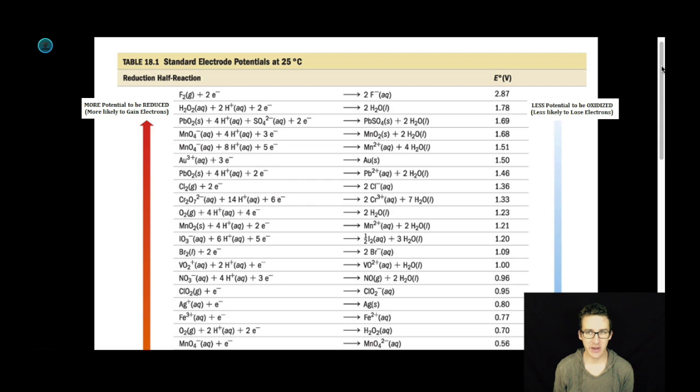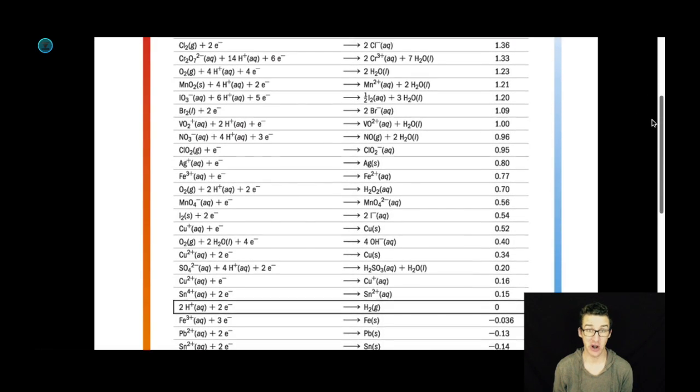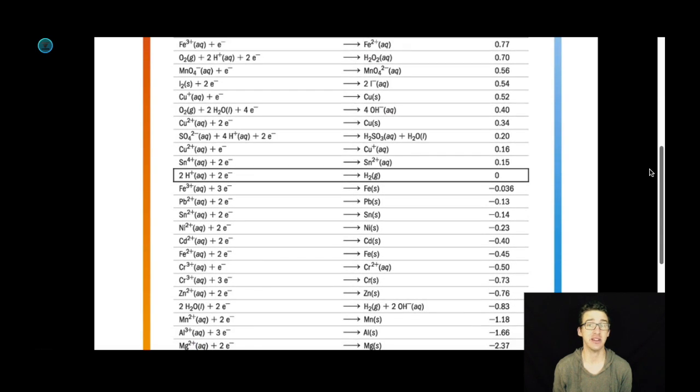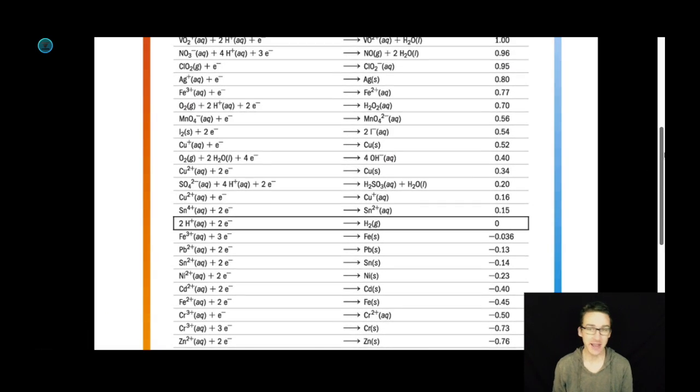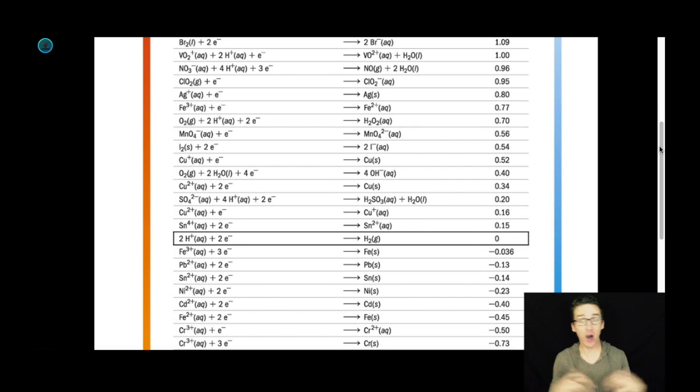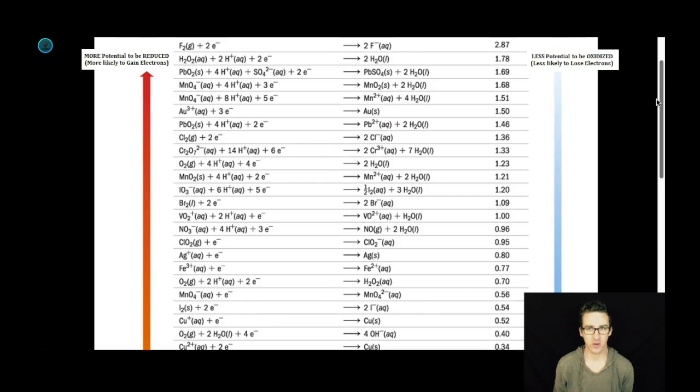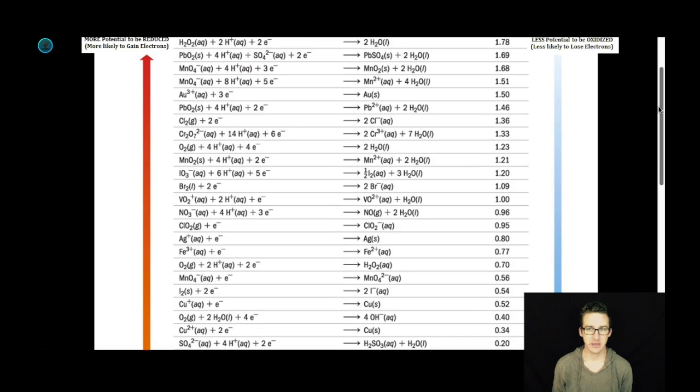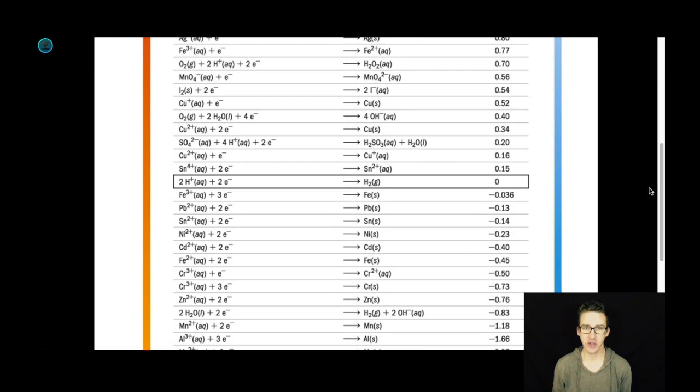Let's take a look at a reduction potential chart. You've got this beauty of a chart in your notes. It's important that you take a moment, pause the video, and just look at this chart. Some important things to note: First, notice that smack dab in the middle, we have our hydrogen ion reduction with a standard reduction potential of zero volts. That's our basis for comparison. Everything else and their ability to gain electrons is going to be compared to how easy it is for the hydrogen ion to gain electrons.